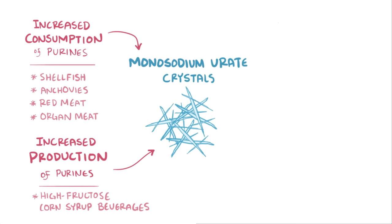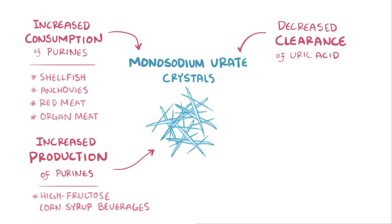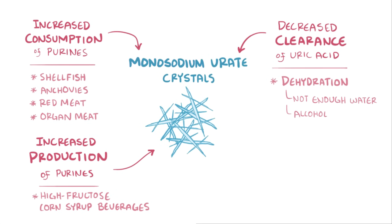Another way crystals could form is from decreased clearance of uric acid, which can result from dehydration from not drinking enough water or consumption of alcoholic beverages, both allowing uric acid to precipitate out. Regularly eating these kinds of foods can also lead to obesity and diabetes, both of which are risk factors for gout.